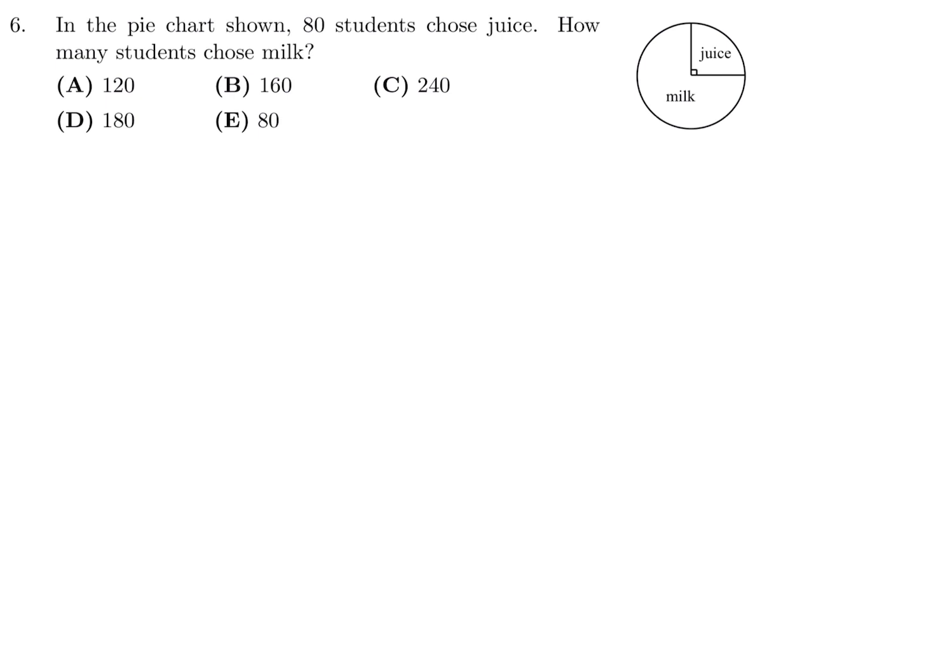then three quarters must be equal to 3 times 80, which is 240. So if 240 people chose milk, number 6, the answer is C.